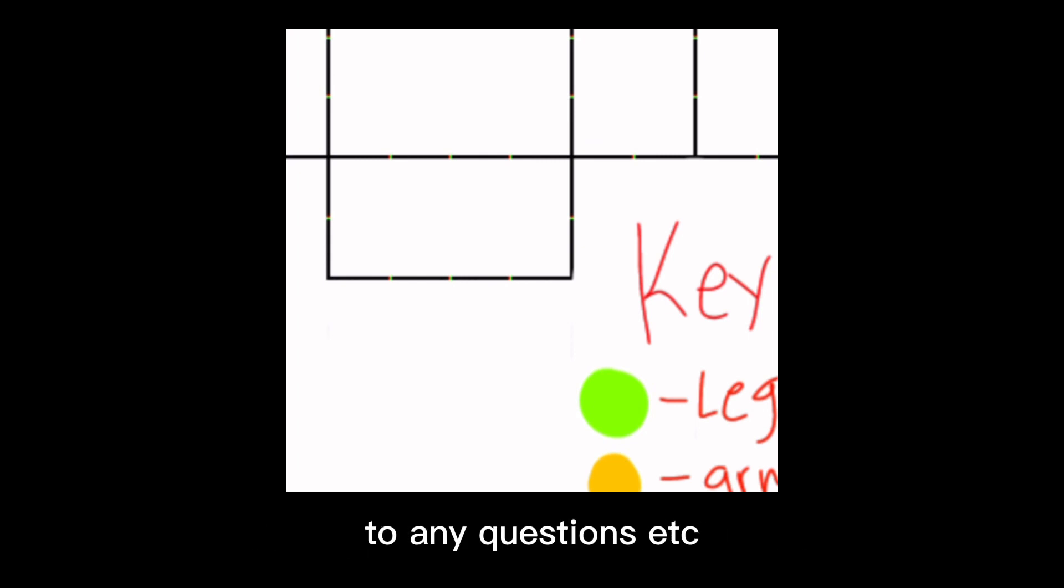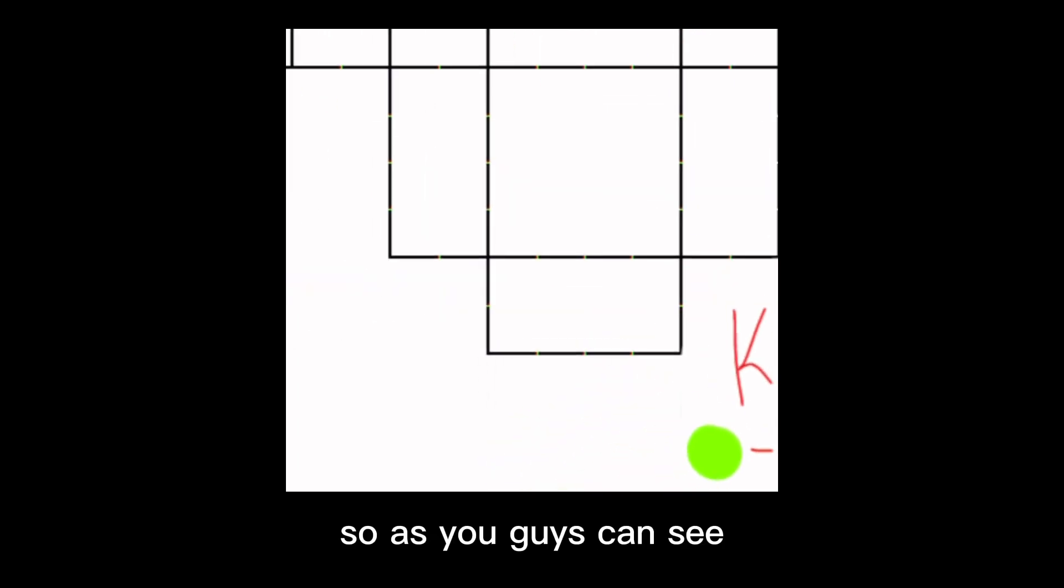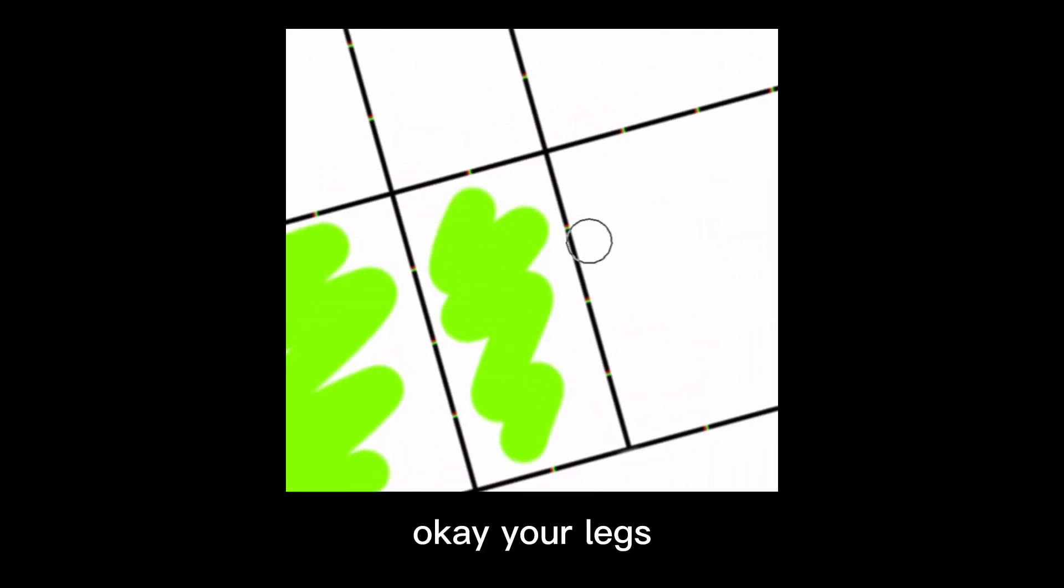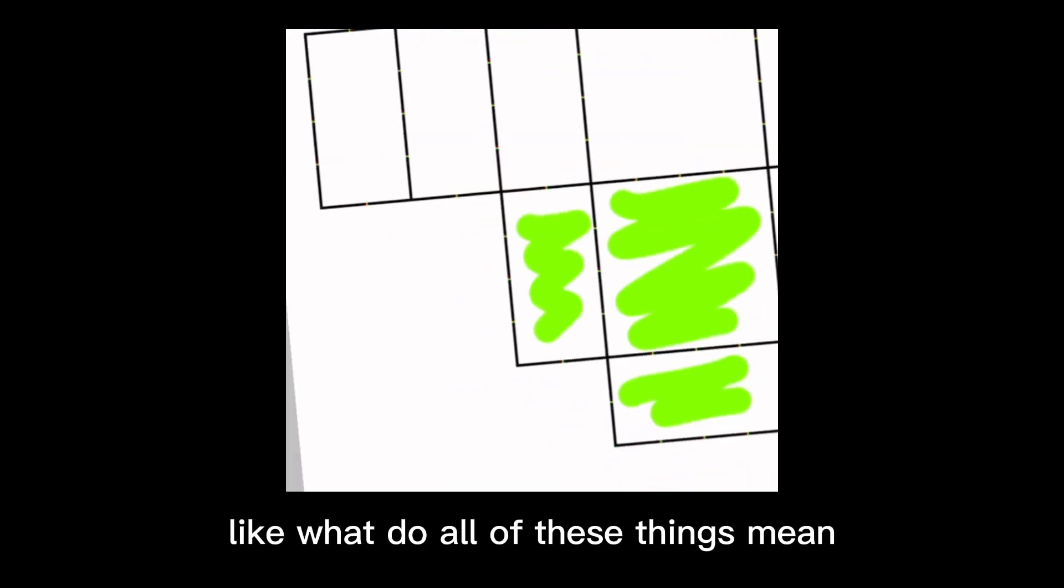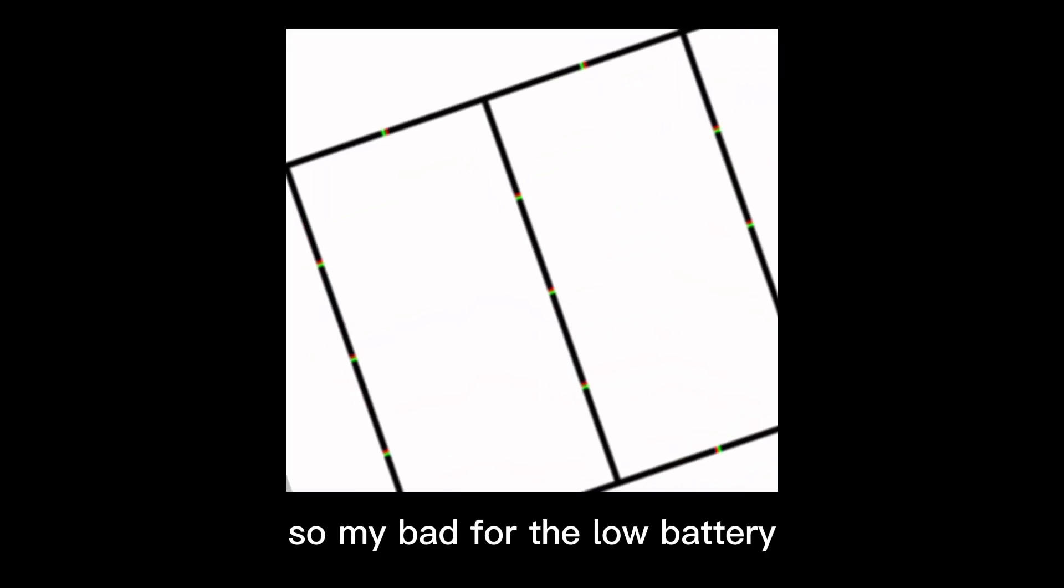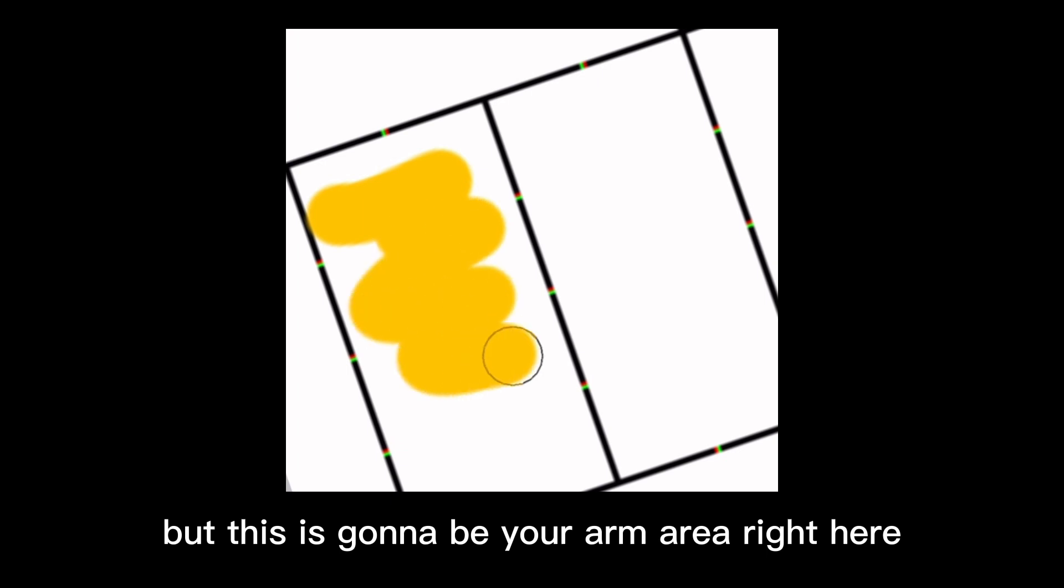I'm going to begin, so we're going to start with the legs. As you can see, this part is going to be your leg area. I'm going to go in detail what all of these things mean. First I'm just going to shade it in to show you guys what I mean. This is going to be your arm area right here.